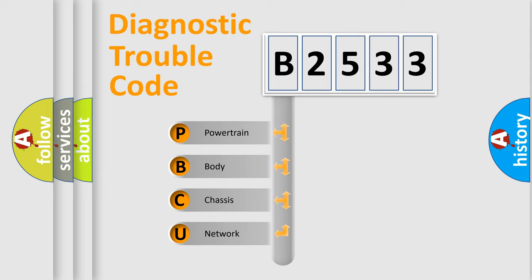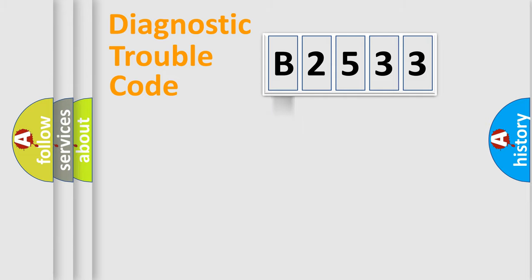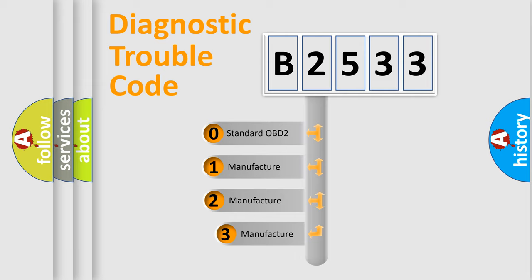We divide the electric system of automobile into four basic units: Powertrain, Body, Chassis, and Network. This distribution is defined in the first character code.